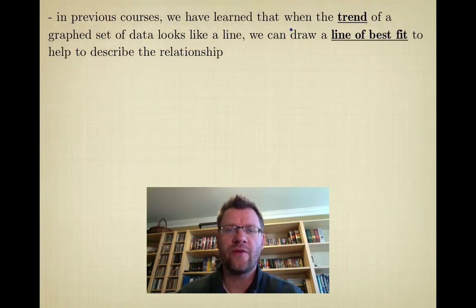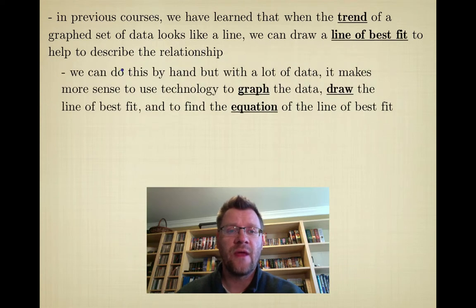In previous courses we've learned that when the trend of a graphed set of data looks like a line, we can draw a line of best fit to help describe the relationship. We did this a lot in physics as well, not just math. We can do this by hand, but with a lot of data it makes more sense to use technology to graph the data, draw the line of best fit, and find the equation instead of doing it by hand.